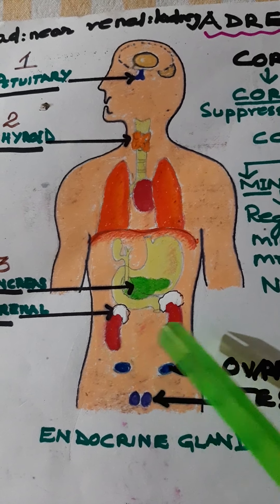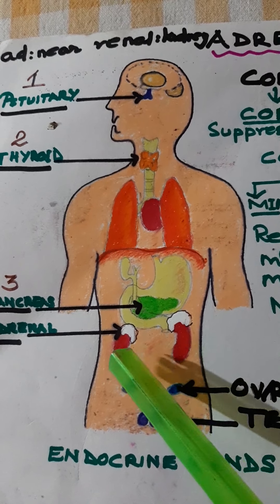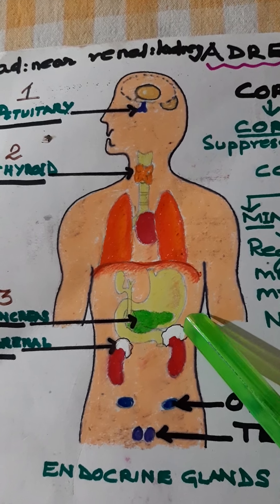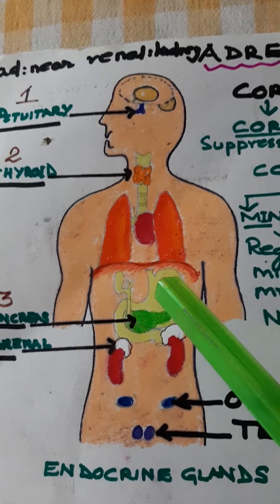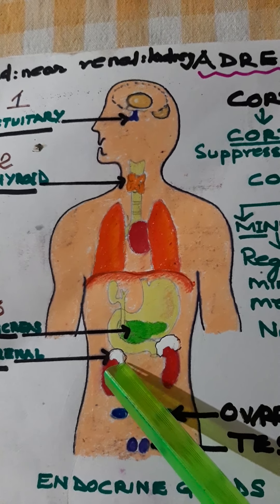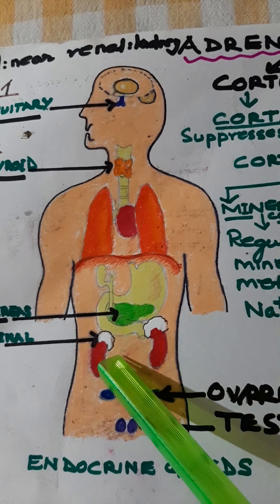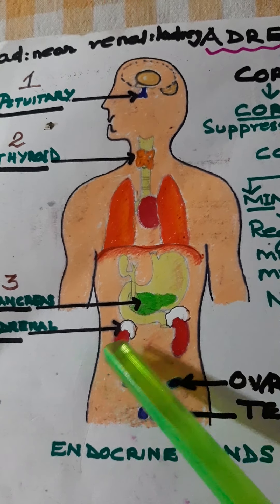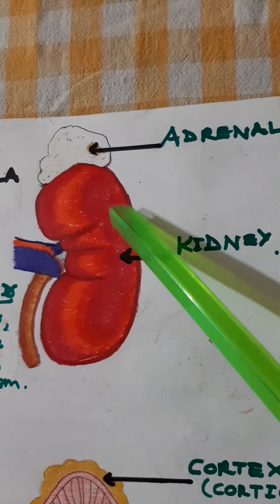Here you can see the two red ones — these are the kidneys — and on top of the kidneys are white patches; these are the adrenal glands. 'Ad' means near, 'renal' means kidney, so adrenal means near the kidneys.